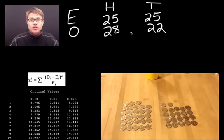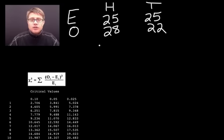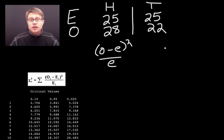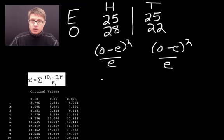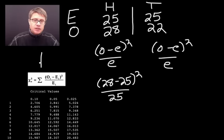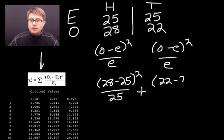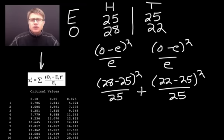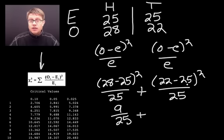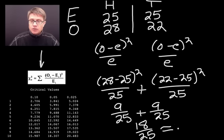Now we apply chi-squared. We take (O - E)² / E for the heads column plus (O - E)² / E for the tails column. For heads: (28 - 25)² / 25 = 9/25. For tails: (22 - 25)² / 25 = 9/25. Adding them: 9/25 + 9/25 = 18/25 = 0.72. So our chi-squared value for this data is 0.72.